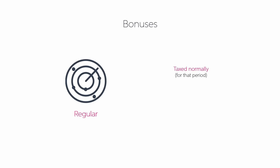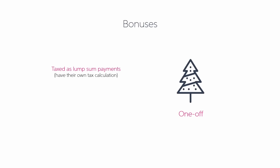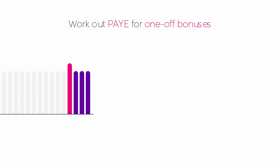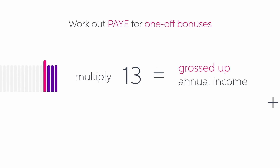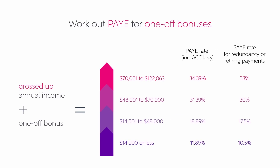There are two main types of bonuses. Regular bonuses are those paid periodically — common examples are performance bonuses, incentives and overtime. The other kind is a one-off bonus, generally paid annually or under special conditions and treated as a lump sum payment. Both types have Holiday pay and KiwiSaver calculated against them. The main difference is how they are taxed and how they affect annual leave rate calculations. Regular bonuses are taxed normally for the period they're paid out in, and the amount is included in both ordinary and average leave calculations. One-off bonuses are taxed as lump sum payments with their own tax calculation, and they only affect average leave calculations. To work out the PAYE tax on a one-off bonus, take the last four weeks of gross earnings and multiply by 13 to get the grossed up annual income. Add the one-off bonus amount to this and tax it at the appropriate rate — available on the IRD website. If you're using MYB payroll software, your product can help you work this out.